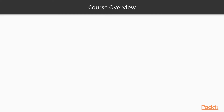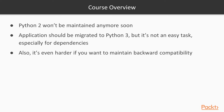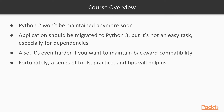Let's now see an overview. Python 2 won't be maintained anymore soon, so an application should be migrated to Python 3. That's not an easy task, unfortunately, especially if your application has dependencies. It's even harder if you want to maintain backward compatibility — if your application needs to run on both Python 2 and Python 3. Fortunately, with a series of tools, practices, and tips, you can easily migrate your application from Python 2 to Python 3, and eventually maintain backward compatibility.